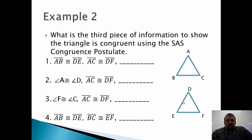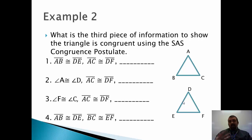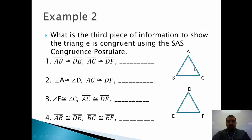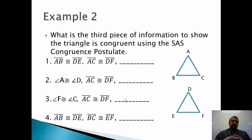Numbers one and two were essentially the same problem — I just mixed up what was given. Number three is different: if I'm told Angle F and Angle C are congruent, and segment AC and segment DF are congruent, then going Side, Angle, Side in order, I need segment BC and segment EF. So segment BC is congruent to segment EF.